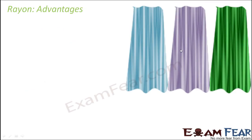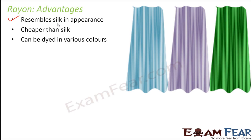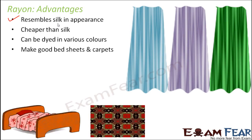Some of the most important properties of rayon are that it resembles silk in appearance but is a lot cheaper than natural silk. Rayon can be dyed in various colors such as red, blue, black, and yellow. Due to its availability in various colors and silk-like appearance, it is in high demand for making different types of garments and clothes.